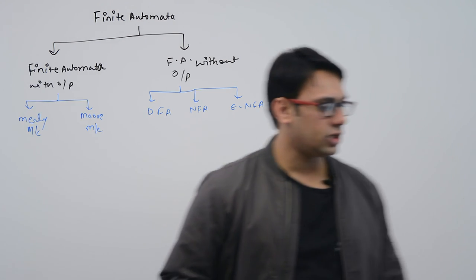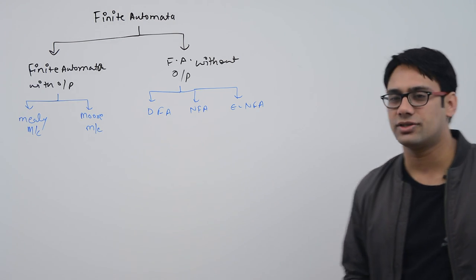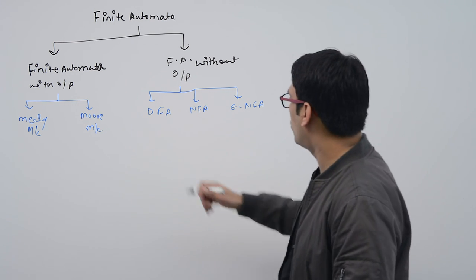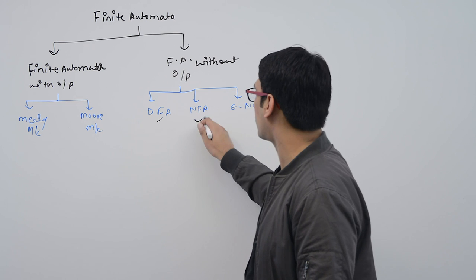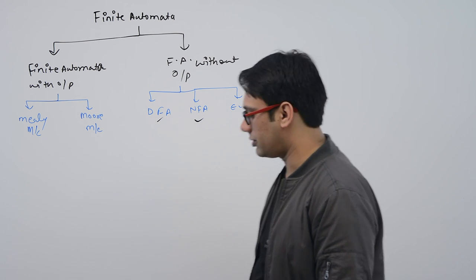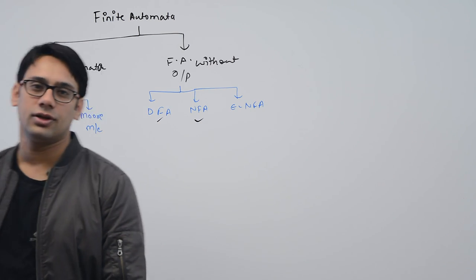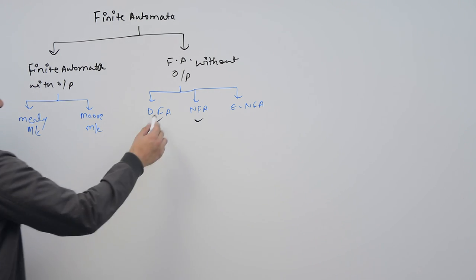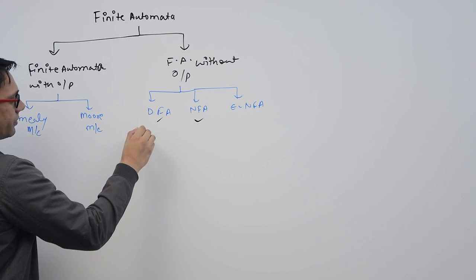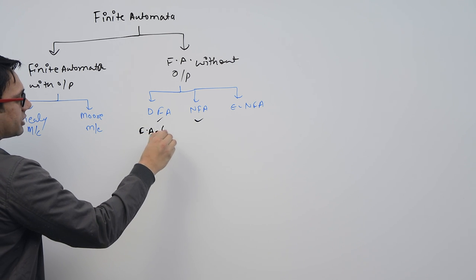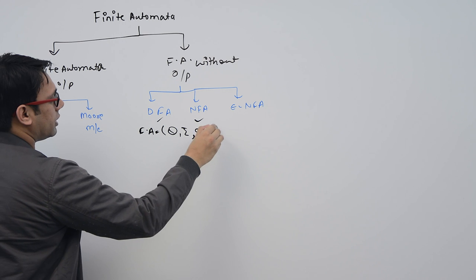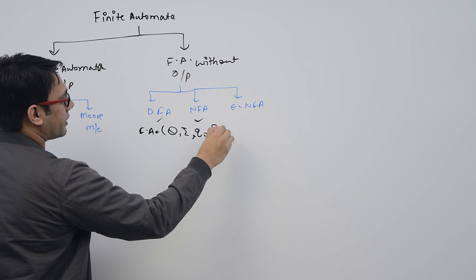Till now we have seen what is a deterministic finite automata. Now let us look at what is a non-deterministic finite automata. Both DFA and NFA can be represented by the 5-tuple: Q, Σ, Q0, δ, and F.